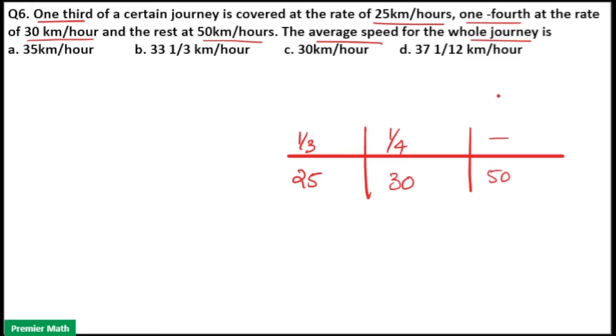You can take any number as total distance here, but to solve it fast, take a number such that one-third of that number should be divisible by 25 and one-fourth of that number should be divisible by 30. That is LCM of 3 into 25 is 75 and LCM of 4 into 30 is 120. LCM of 75 and 120 is 600. That is a number should be divisible by 75 and 120 is 600 here.